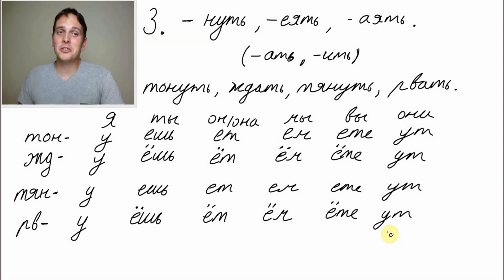And just because we got this chance, let's exercise one word out of each example. Try to say: You are sinking. Ты тонешь. We are waiting. Мы ждём. He or she pulling. Он, она тянет. And you, in polite or plural, tearing apart, вы рвёте.